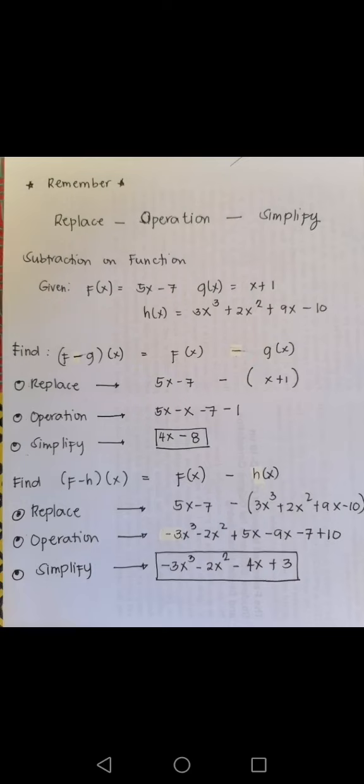Do the operation. Here you need to distribute the negative sign on the value of h(x). That becomes -3x³, negative times positive 2x² becomes -2x², negative times positive 9x becomes -9x, and negative times negative 10 is positive 10. Again, remember you only have to add and subtract the same variables by combining like terms.